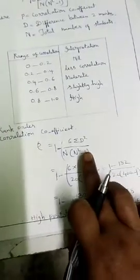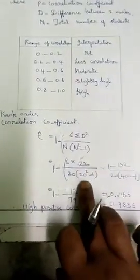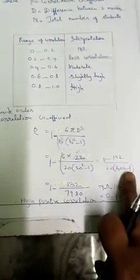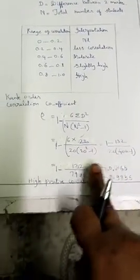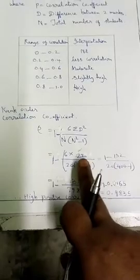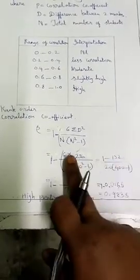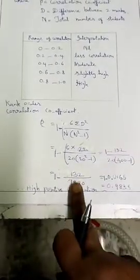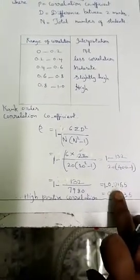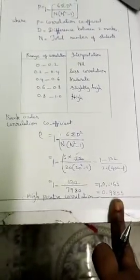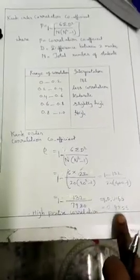Substituting: sigma d-squared equals 22, which gives 6 times 22 equals 132. Then 1 minus 132 divided by n(n²-1). The result is approximately 0.9 or 1 — indicating a high positive rank correlation. The rank correlation coefficient is approximately equal to 1.